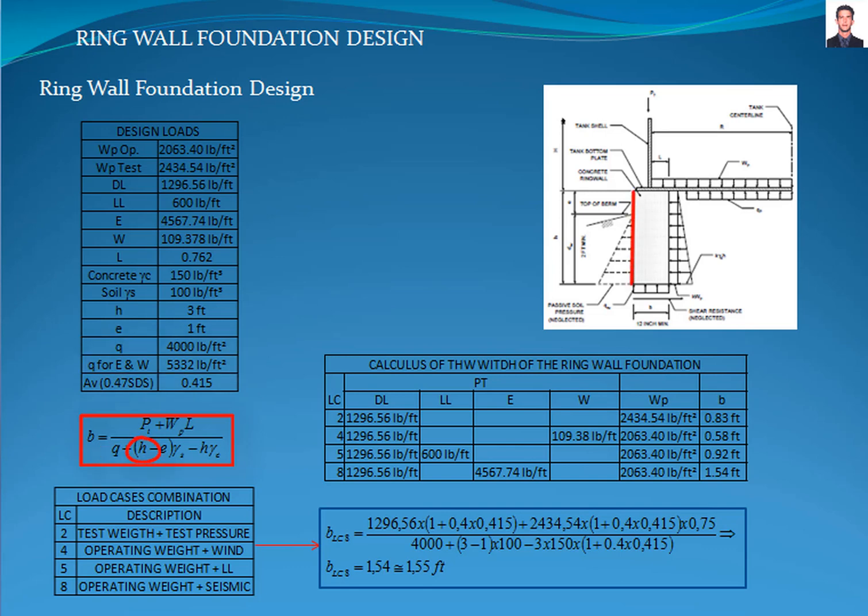H is the height of the ring wall foundation that is assumed. E is the distance from the edge of the ring wall foundation to the top of the berm. Gamma S is the specific weight of the backfilled soil, and gamma C is the specific weight of the concrete.